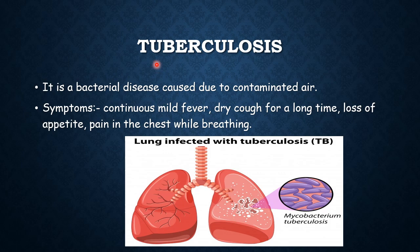After typhoid, the next bacterial disease is tuberculosis. Tuberculosis is caused due to contaminated air, and in tuberculosis, the bacteria mainly affects the lungs. The symptoms of tuberculosis include continuous mild fever, dry cough for a long time, loss of appetite — meaning the person is not willing to eat — and pain in the chest while breathing.